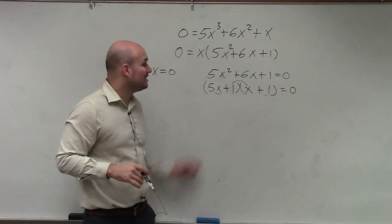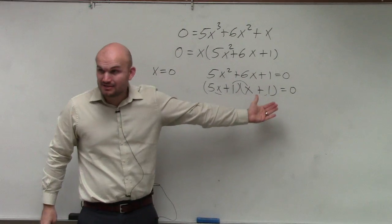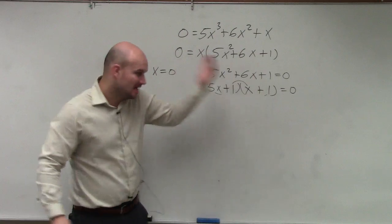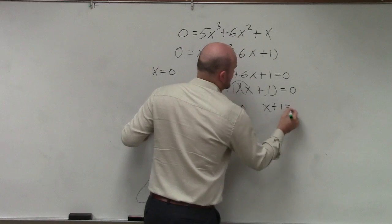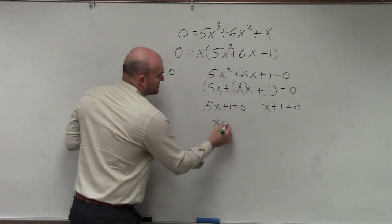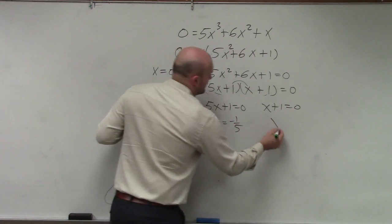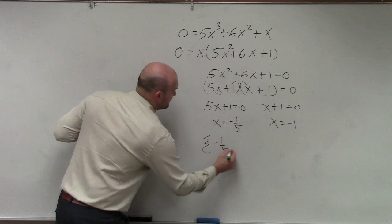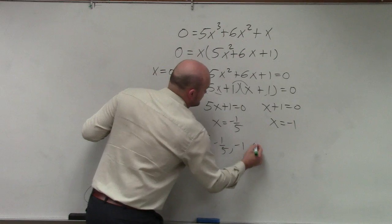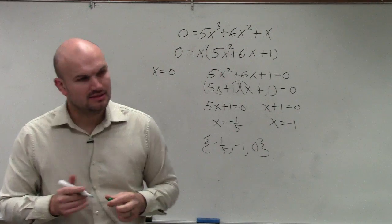OK, now can I apply zero product property again to solve for all my zeros? Yes. So 5x plus 1 equals 0, and x plus 1 equals 0. So therefore, x equals negative 1 fifth, x equals negative 1. Therefore, my solution set is negative 1 fifth, negative 1, 0. Done.